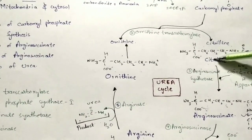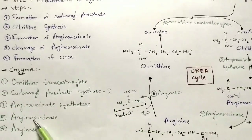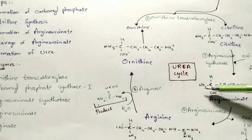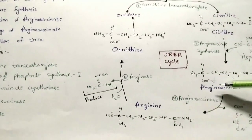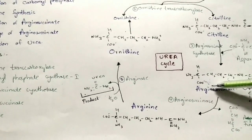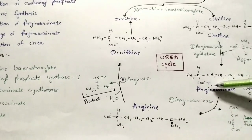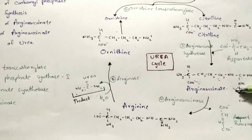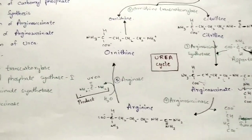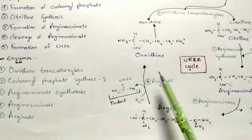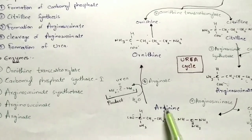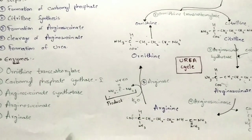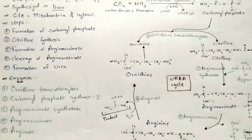The third enzyme, arginosuccinate synthase, catalyzes the conversion of citrulline to arginosuccinate. The fourth enzyme, arginosuccinase, converts arginosuccinate to arginine with liberation of fumarate by the cleavage process. The fifth enzyme, arginase, converts arginine to ornithine with liberation of urea by the intake of a water molecule.